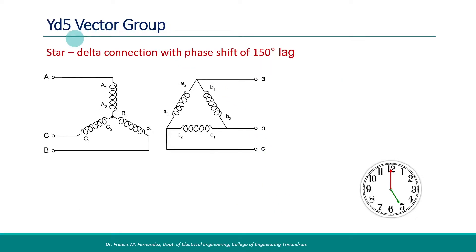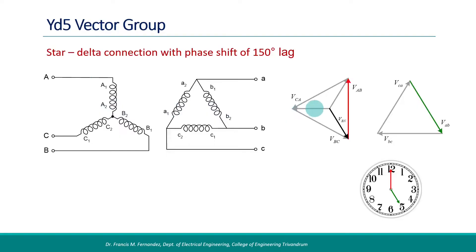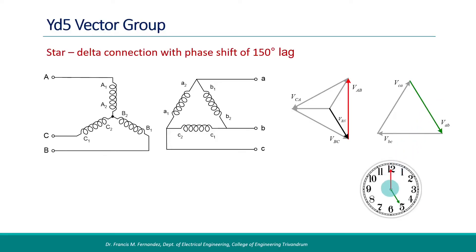Next we consider the YD5 vector group. The primary is star connected and the secondary is delta connected. In the phasor diagram, line voltages on the star connected primary side are decomposed into corresponding phase voltages. Since we are taking line voltage VAB as primary side reference, we need to take VAB for the secondary side also. Here VAB actually comes from winding B of the secondary, and the voltage induced in it will be in phase with the phase voltage of winding B of the primary. The secondary line voltage is lagging by 150 degrees from the corresponding primary voltage — the 5 o'clock position represents this condition. The simplified connection diagram and the displacement diagram are shown.